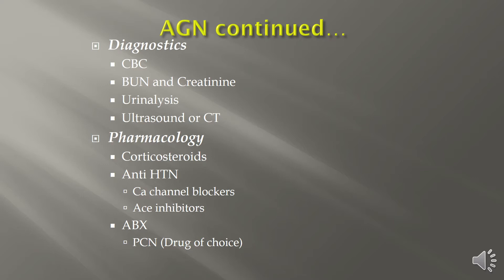Diagnostically, we want to look at a couple of lab values. H&H can be decreased in reaction to an anemic response with loss of blood or irritation from infection. BUN and creatinine will be elevated and GFR is decreased. Creatinine and GFR have an inverse relationship — as one decreases, the other increases. A urinalysis will show red blood cells, proteinuria, and hematuria. Ultrasound or CT will show exactly where the inflammation is in the renal system and can reveal any change in kidney size.